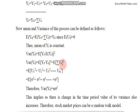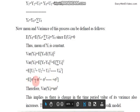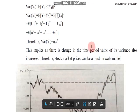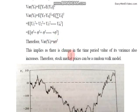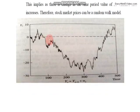Y_t minus Y_0 equals the summation of u_t. Opening this summation, the variance of each u is constant, and when you sum all these values you get n times σ². This means that as the time period increases — 1, 2, 3 — the variance is also increasing, so variance is not constant. This is an example of a random walk without drift.